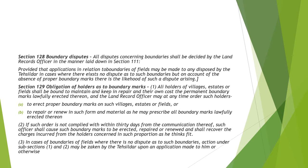Section 128 — Boundary disputes: all disputes concerning boundaries shall be decided by the land record officer. Section 129 — Obligation of holders as to boundary marks: all holders of villages, estates, or fields shall be bound to maintain and keep in repair at their own cost the permanent boundary marks lawfully erected thereon. The land record officer may at any time order such holders to erect proper boundary marks or repair or renew them in such form and material as he may prescribe. If such order is not complied with within 30 days from communication, such officer shall cause such boundary marks to be erected, repaired, or renewed and shall recover the charges incurred from the holders concerned in such proportions as he thinks fit.